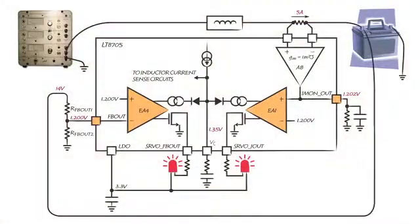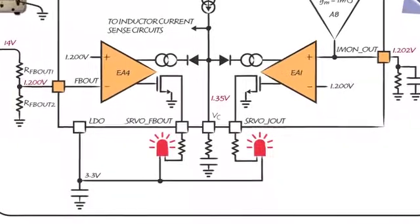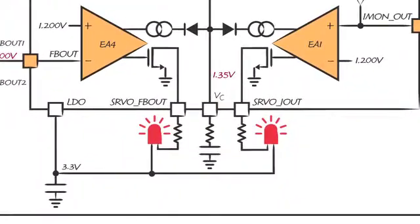Here the battery has just reached its target charge voltage and its charge current is still at 5 amps. Now both output voltage and output current loops are active at the same time. Both status pins, servo feedback out and servo I-out are pulled low so both LEDs are lit.